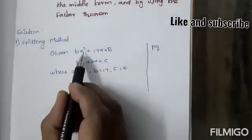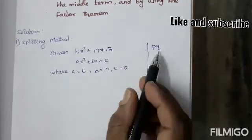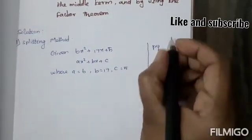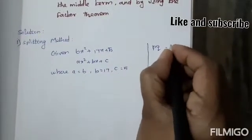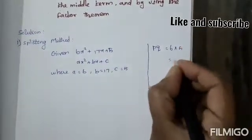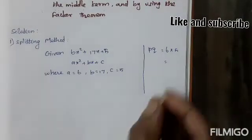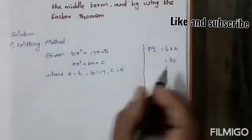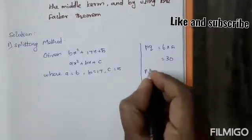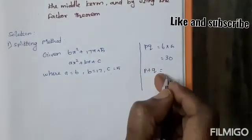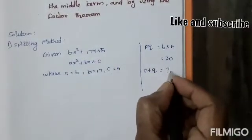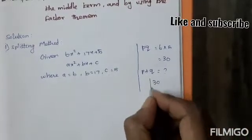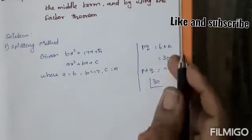p × q = 6 × 5 = 30. We need to find factors of 30 that add up to the middle term, which is 17.